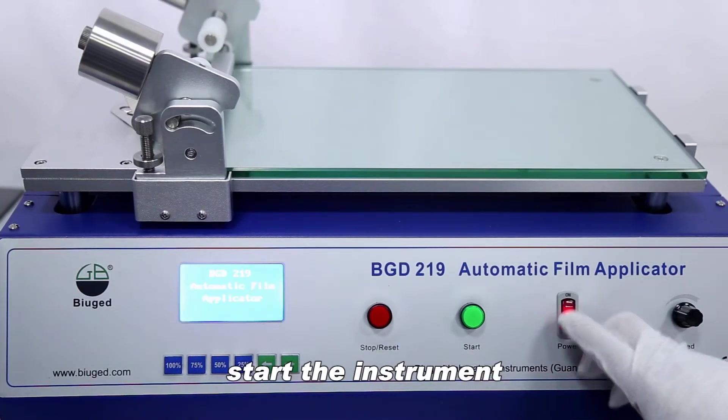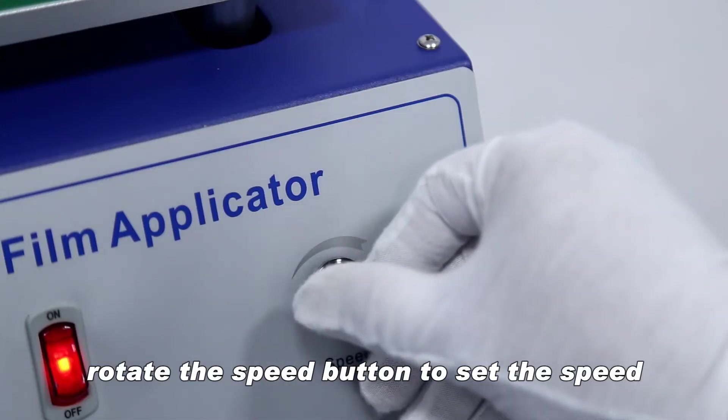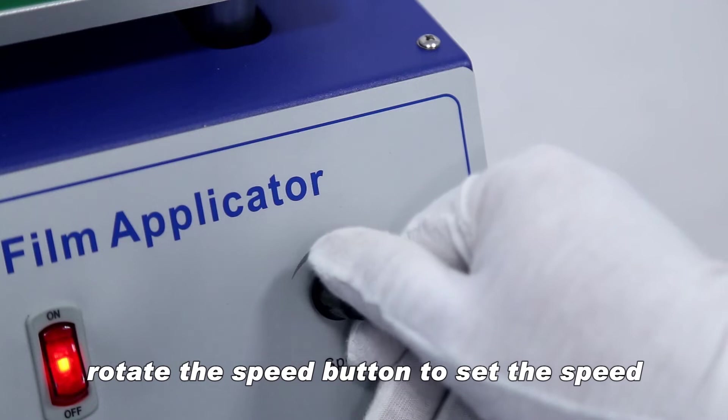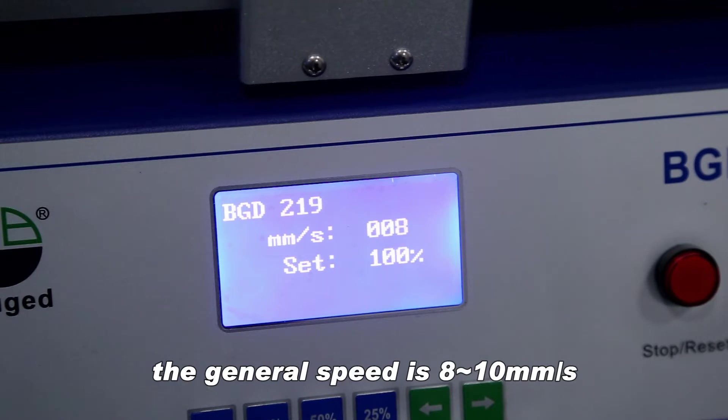Before the test, start the instrument. Rotate the speed button to set the speed. The general speed is 8 to 10 millimeters per second.